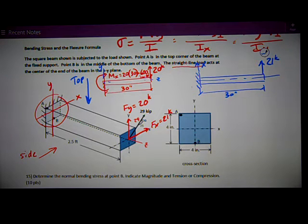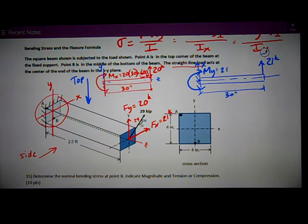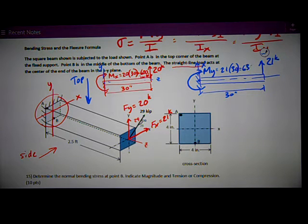I've got a reaction moment. Now the Y-axis is coming out of the page at me. This is an MY. Once again, it's just force times perpendicular distance, 21 times 30. 630 inch kips.